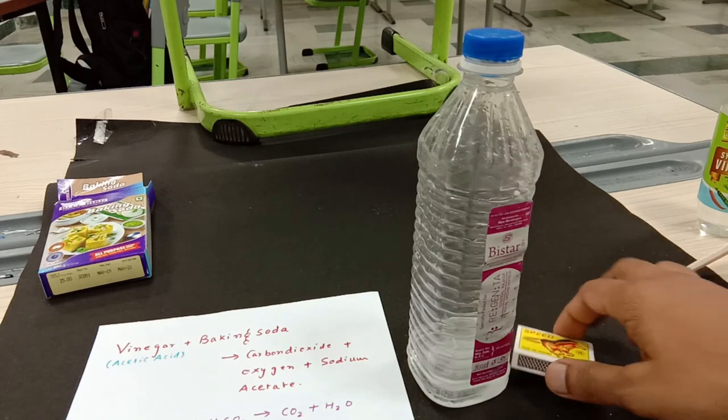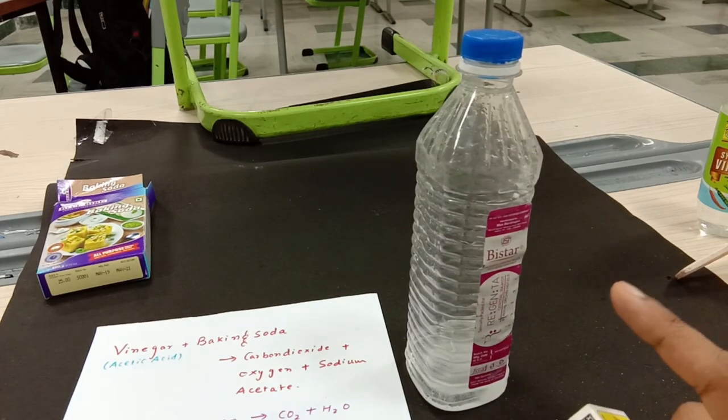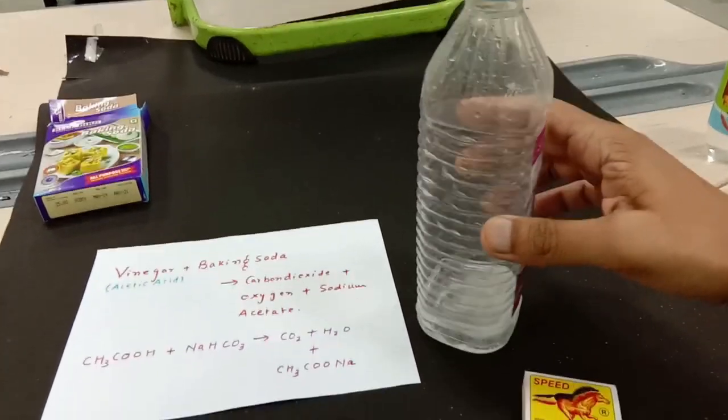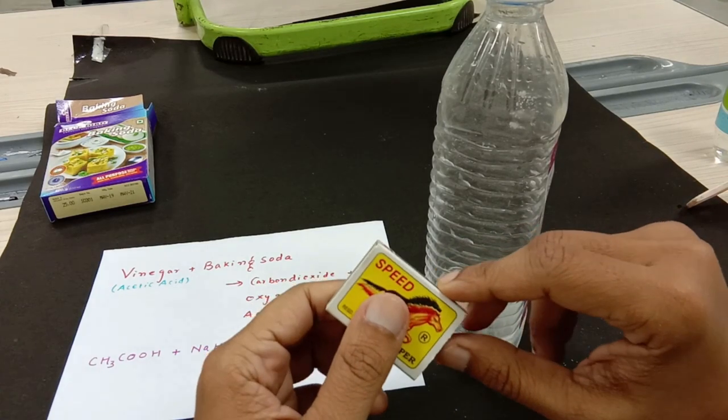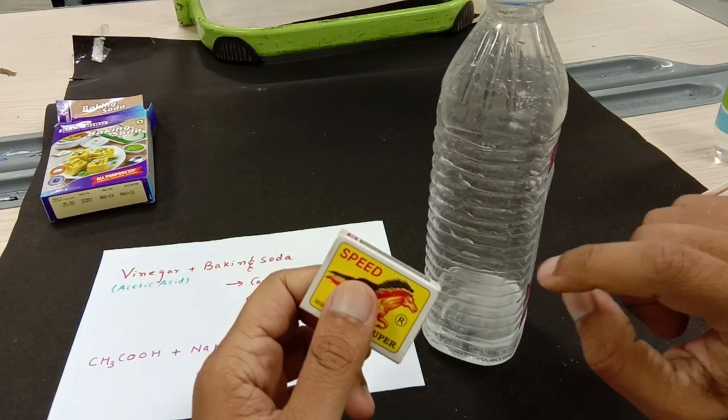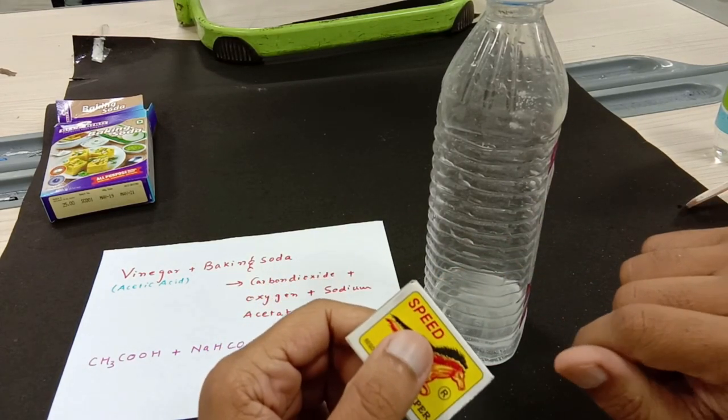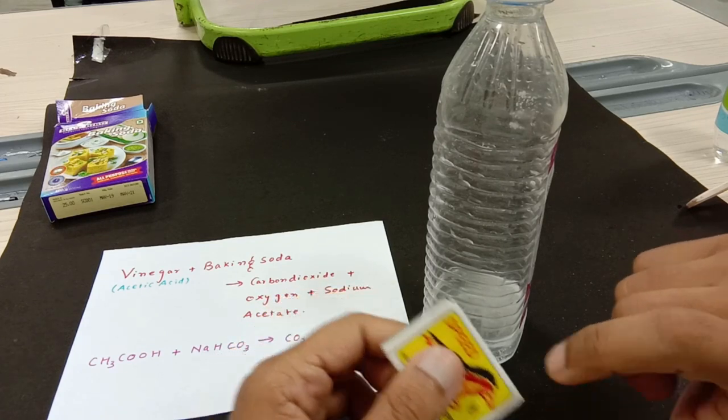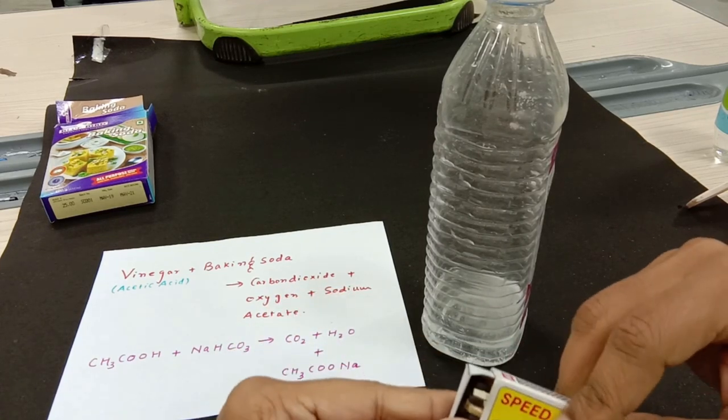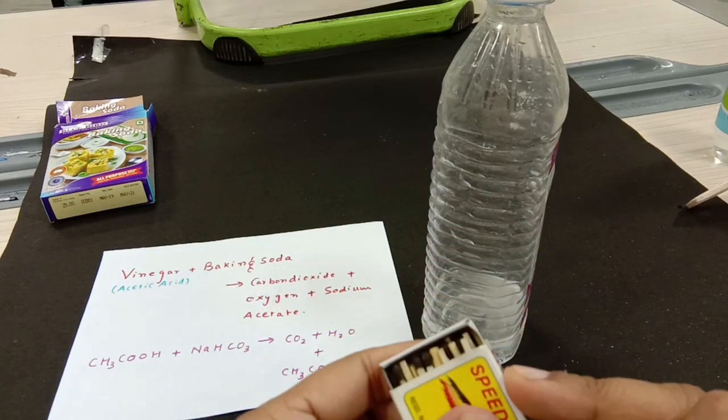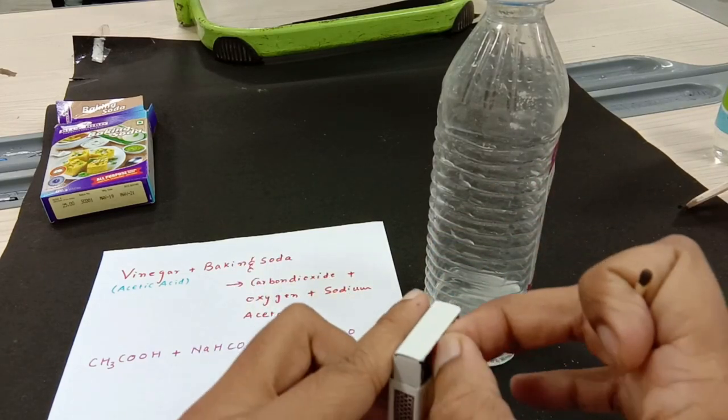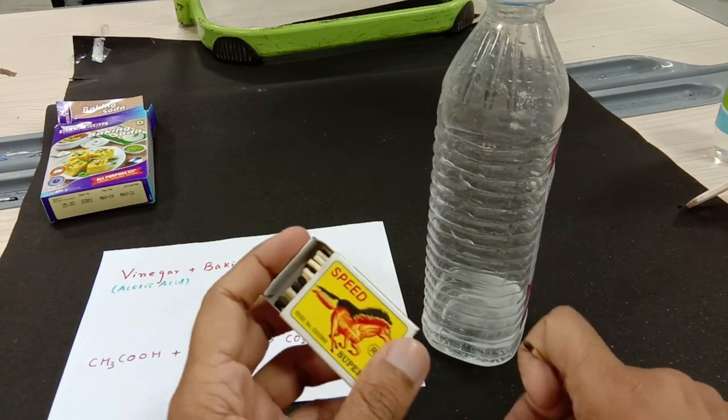Since I want to check whether this gas inside is carbon dioxide or not, I am going to take a burning matchstick and I am going to put it in. We know that carbon dioxide is a non-supporter of combustion, so the flame will extinguish. Let me take a matchstick. We will do it twice to double check our results.